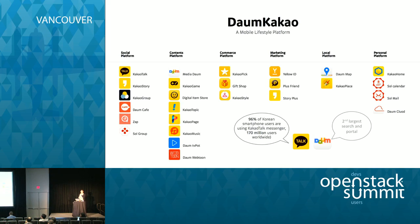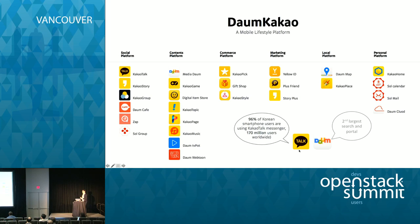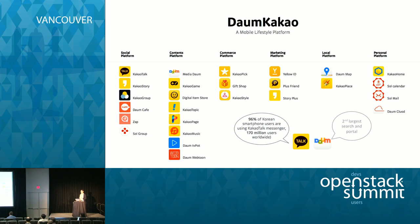I'm coming from Daum Kakao. Daum Kakao is a result of the two major IT companies in Korea merging. One is Daum and one is Kakao. Kakao is a very popular mobile messenger on a global scale, but not everyone is using that, right? Kakao has 170 million users right now, and Daum is the number two search company in Korea.